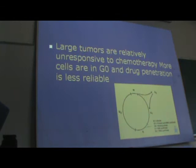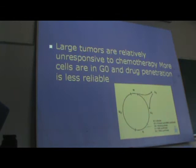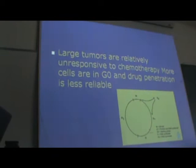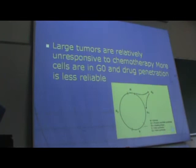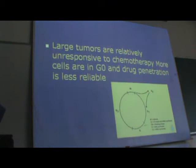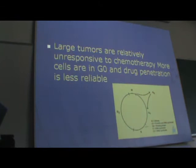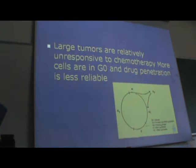In big tumors there are hypoxic cells with insufficient oxygen and nutrition, putting them in the G0 state, which makes them a poor target for chemotherapy. So the smaller the tumor, the larger the growth fraction and the greater the impact of chemotherapy. Conversely, the larger the tumor, the smaller the growth fraction.